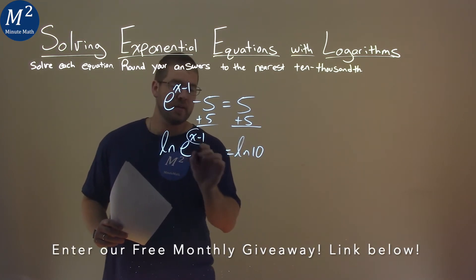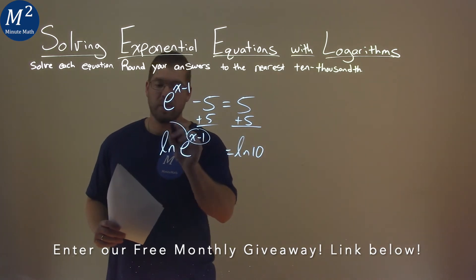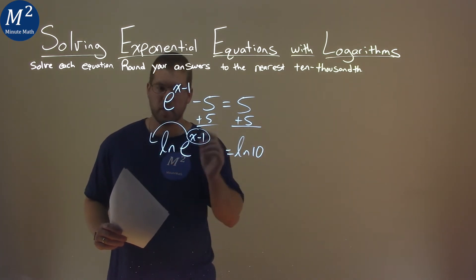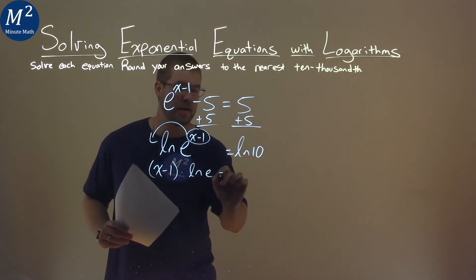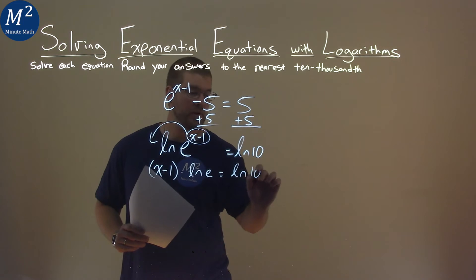That allows me to take this exponent right here and bring it out front. So we have now x minus 1 times natural log of e is equal to natural log of 10.